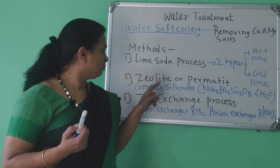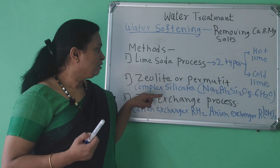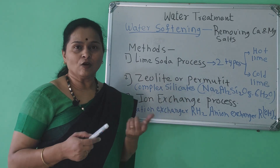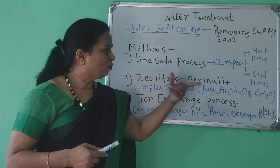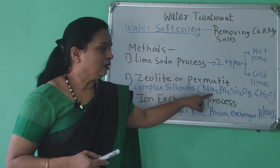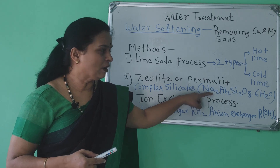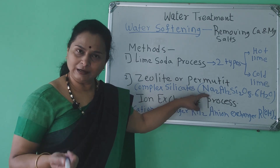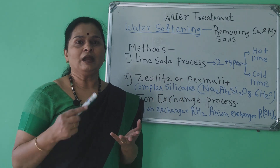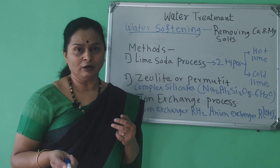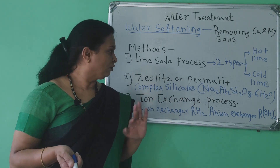The other method is the zeolite or permutite method. Complex silicates of oxide are used, known as zeolite or permutite. The sodium ions, which are positive ions or cations, replace calcium and magnesium ions in hard water, causing the water to become soft.